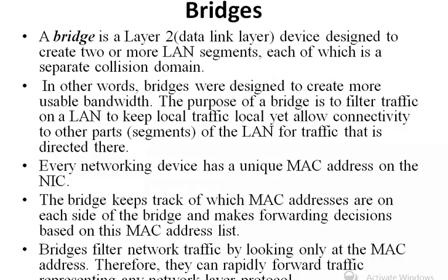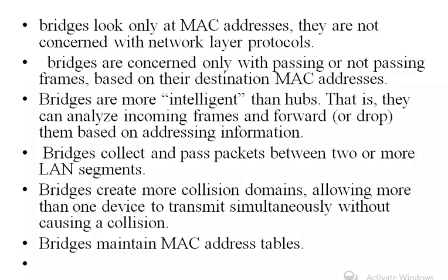Every network device has a unique MAC address on its NIC. The bridge keeps track of which MAC addresses are on each side of the bridge and makes forwarding decisions based on that MAC address list. Bridges filter network traffic by looking only at the MAC address, allowing them to rapidly forward traffic regardless of the network layer protocol. They are not concerned with the network layer, only with passing or blocking frames based on their destination MAC address.